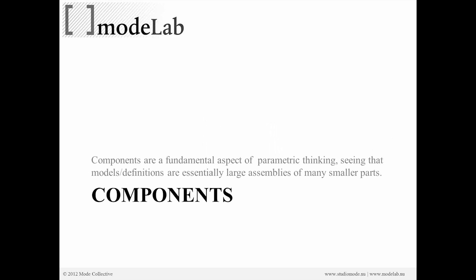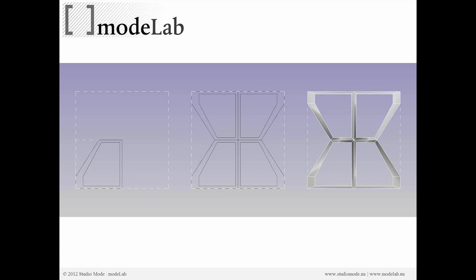Now, talking about components — the reason we're interested in using components is because they're a fundamental aspect of how you think when working in a parametric environment. Parametric models, or in Grasshopper we can call them definitions, are essentially large assemblies of many smaller parts. So we'd like to start with a very simple modeling exercise so we can all be on the same page in terms of how to develop a component that works with this type of transformation.